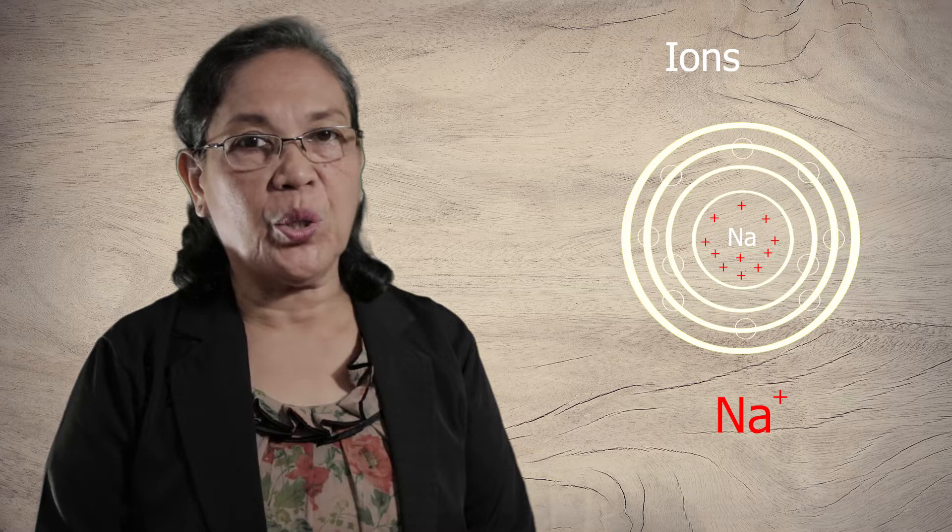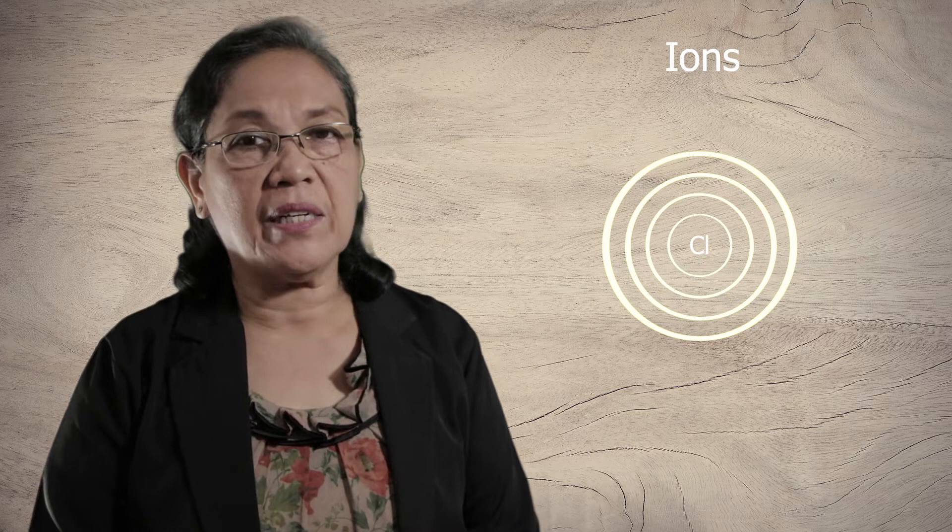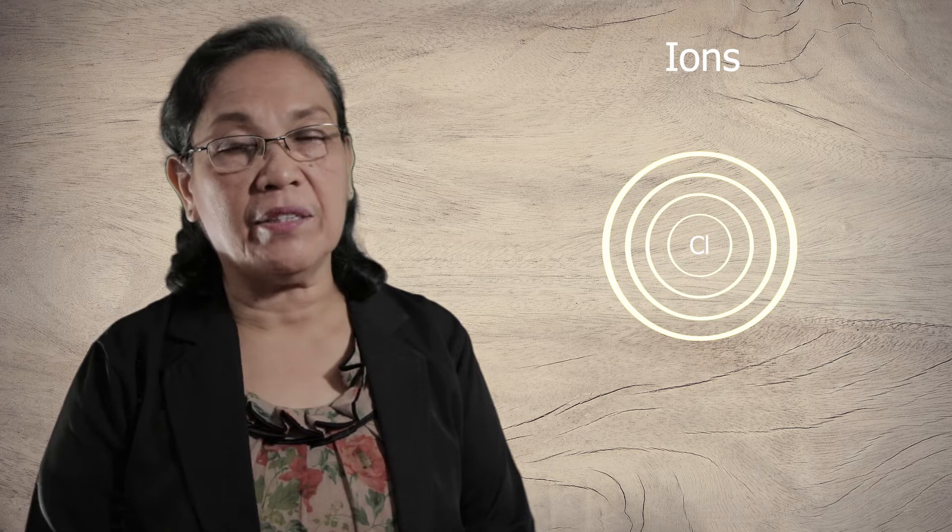On the other hand, when an anion is formed, there is the gain of electron or electrons. For example, we have the chlorine atom. Of course, as an atom, it is charged zero. But when chlorine ionizes, it will become a charged atom, so it is now an ion.